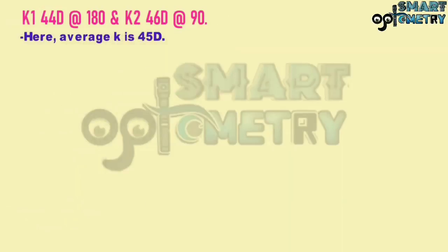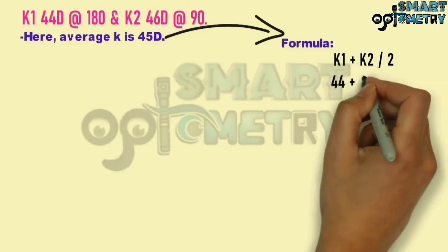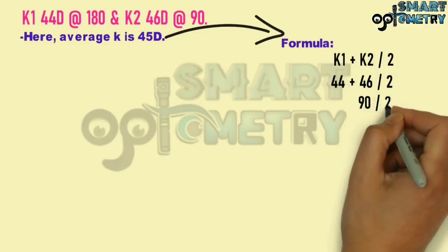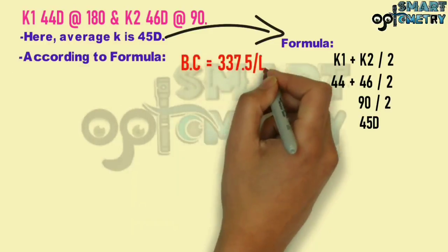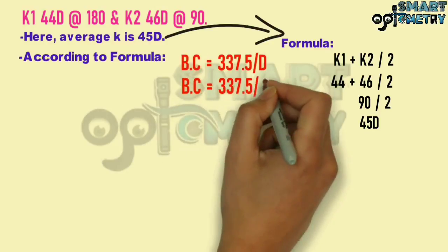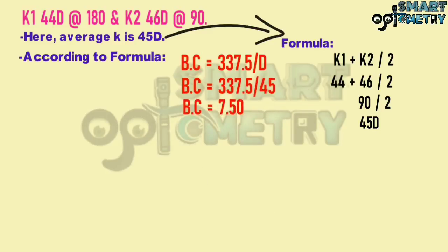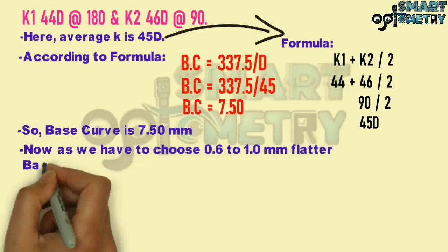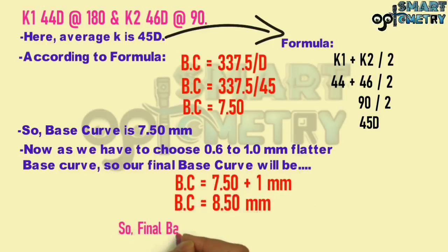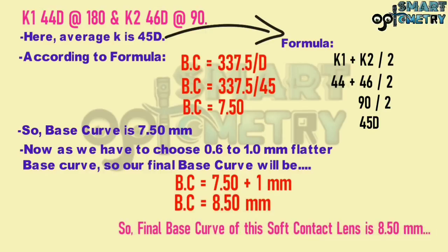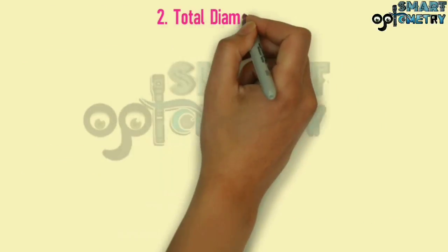Average K = (K1 + K2) / 2 = (44 + 46) / 2 = 45 diopters. Base curve = 337.5 / 45 = 7.50 mm. Since we need to choose a base curve 0.6 to 1 mm flatter, the final base curve = 7.50 + 1.00 = 8.50 mm. So the final base curve of this soft contact lens is 8.50 mm.